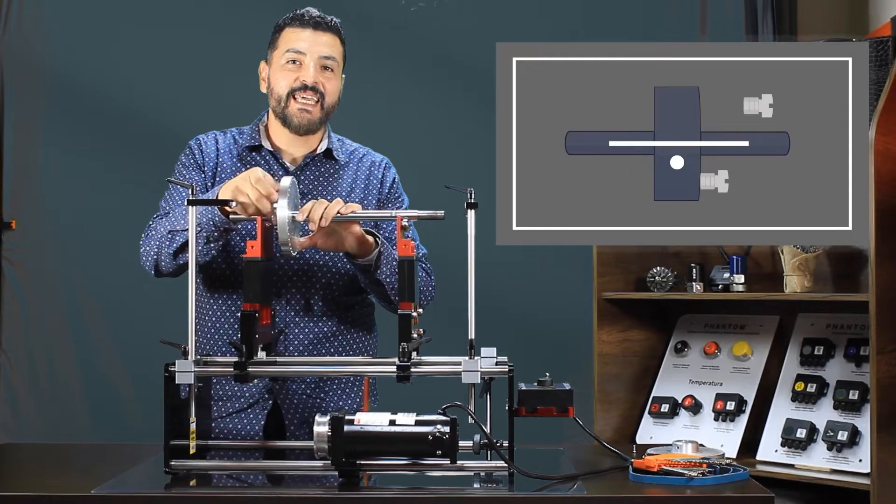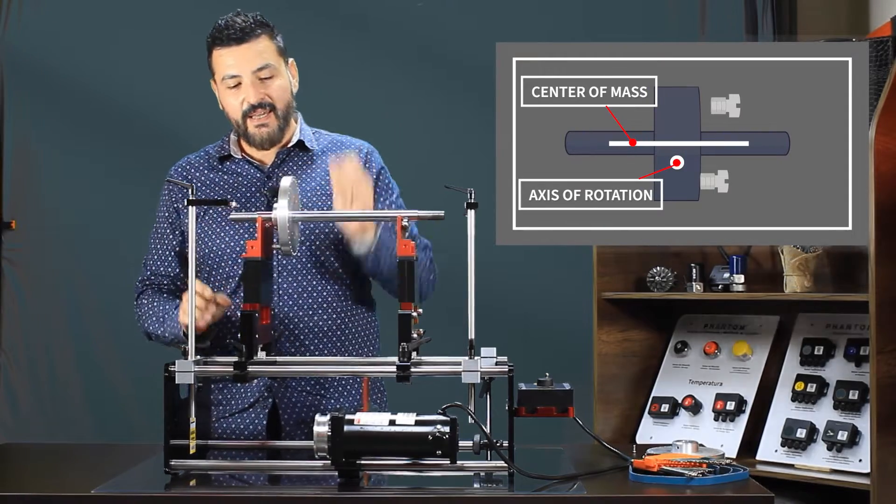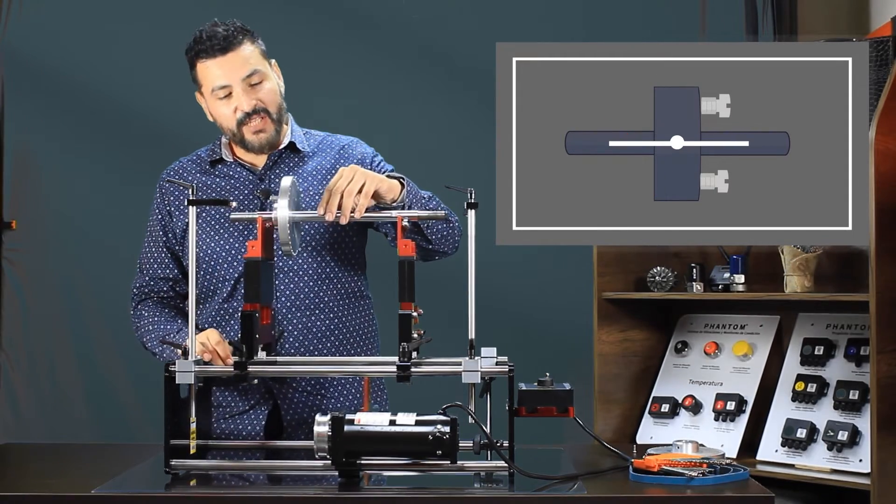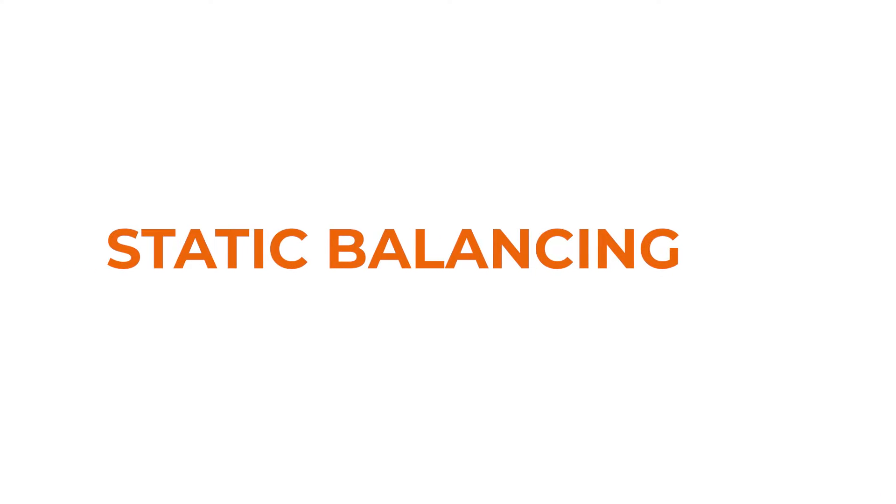With that, we manage to align the center of mass with the axis of rotation of the shaft once again. This is called static balancing.